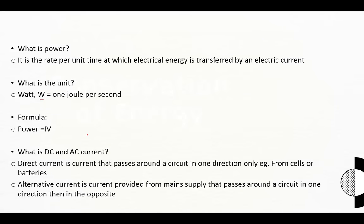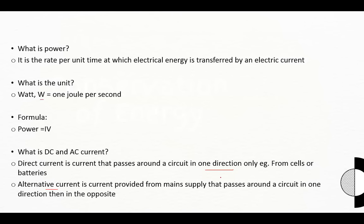Direct current (DC) passes around a circuit in one direction only — for example, from a cell or battery. Alternating current (AC) passes around a circuit in one direction and then the opposite direction repeatedly. AC is supplied from the mains. Most household appliances use a three-pin plug connected to the AC mains supply.